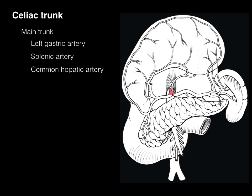The celiac trunk arises from the abdominal aorta. It is the first unpaired vessel, arising right where the two crura of the diaphragm are located. It has three branches: the left gastric artery, the splenic artery, and the common hepatic artery.